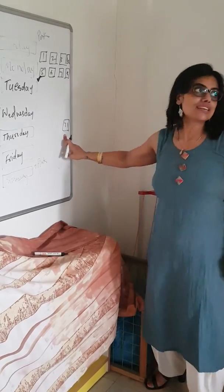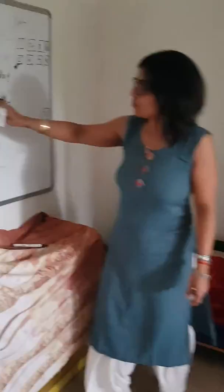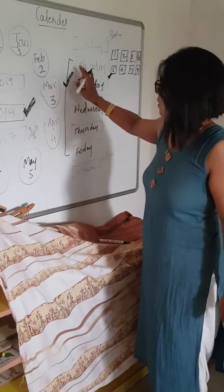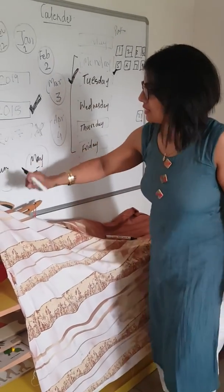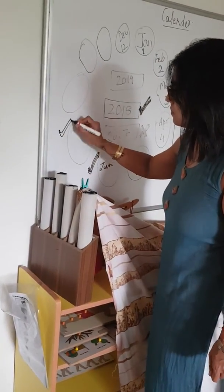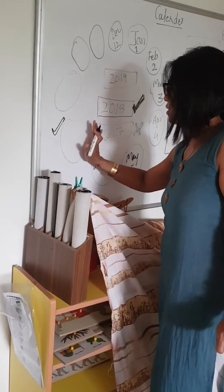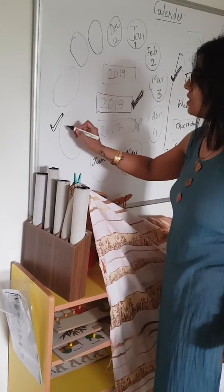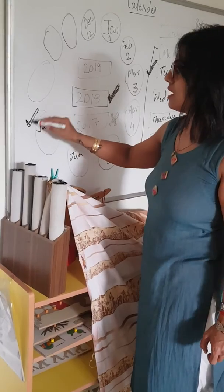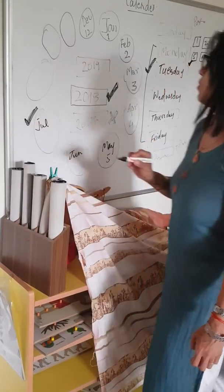You say fourth is finished, today the date is fifth. Like this you will keep doing until you finish the entire packet — thirty one. And then you pick up the month card, place it over here, remove from here, and say now June is over, now it is July.